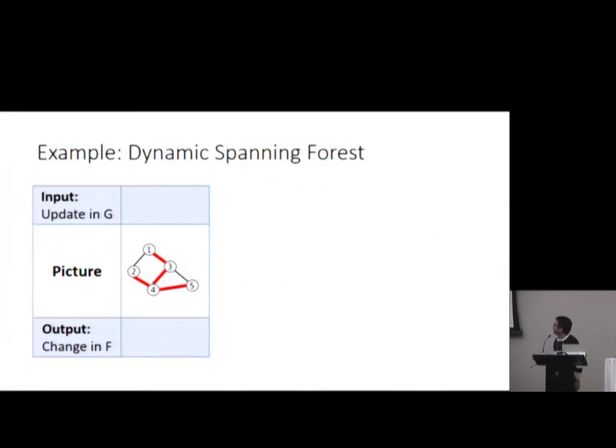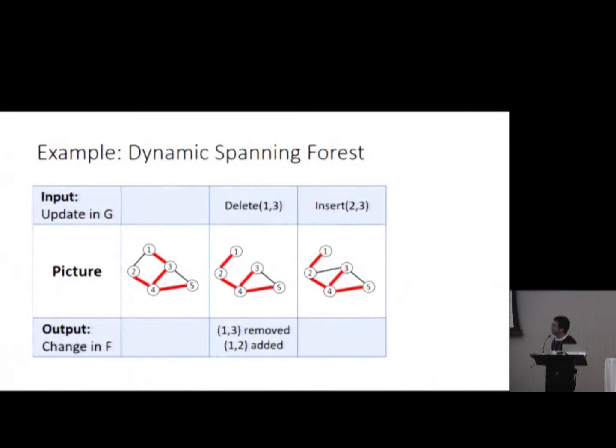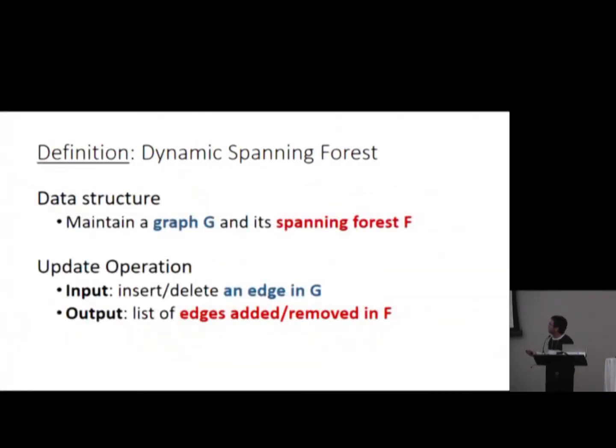Let's see an example. Suppose you have a graph, and you want a data structure such that once there is some update in the graph G, you delete some edge one-three, like this, and you want to update your tree and output the change in your tree or forest. Then the next update comes. You can insert something. If there's no change, you output nothing. The next update comes, you delete two-four, and you update the tree and output a change. So this is the setting.